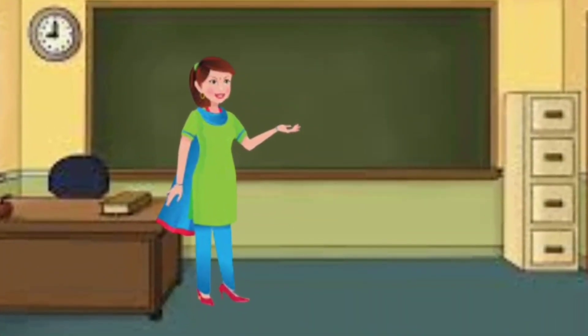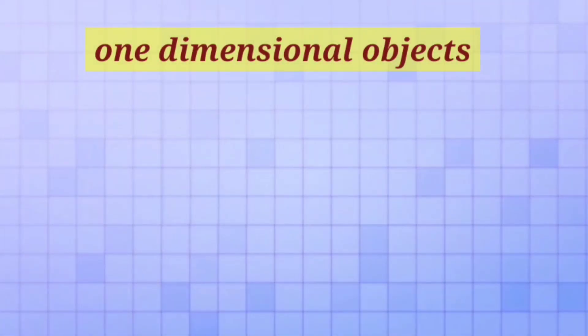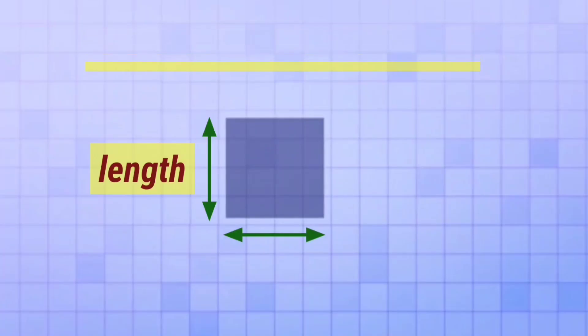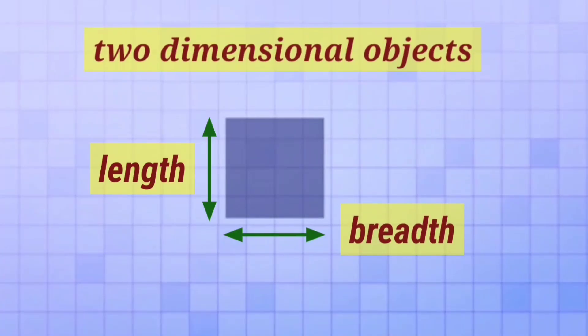Dear students, in geometry, we have learnt about one-dimensional objects. For example, this line segment. To measure a one-dimensional object, we need one-dimensional quantity, which we usually call length. If we move or extend this one-dimensional line by a distance equal to its length, it forms a two-dimensional object.